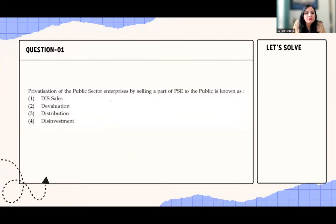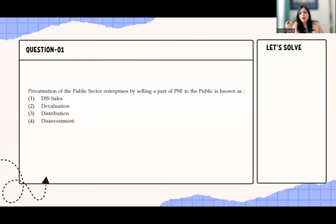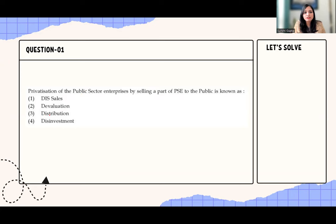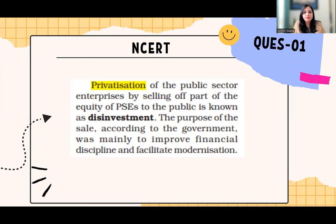Let's come to the first question. Privatization of a public sector enterprise by selling a part of its equity to the public — basically the government is like a company selling shares in itself and getting money in return. So what does this process mean? It is privatization, it is disinvestment.